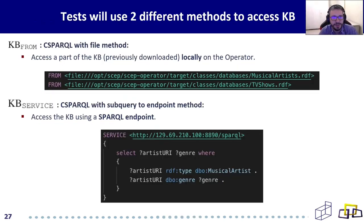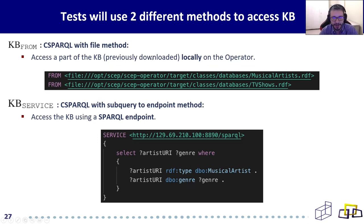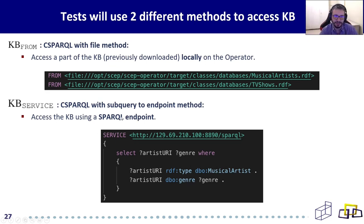We prepared two different methods to access the knowledge base. The first is the KBFROM method, where the operator accesses the knowledge base locally. We previously downloaded the relevant part of the knowledge base for the operator so it can query it locally. The second method is by exposing a SPARQL endpoint, using a centralized knowledge base that all operators query through the SPARQL endpoint.